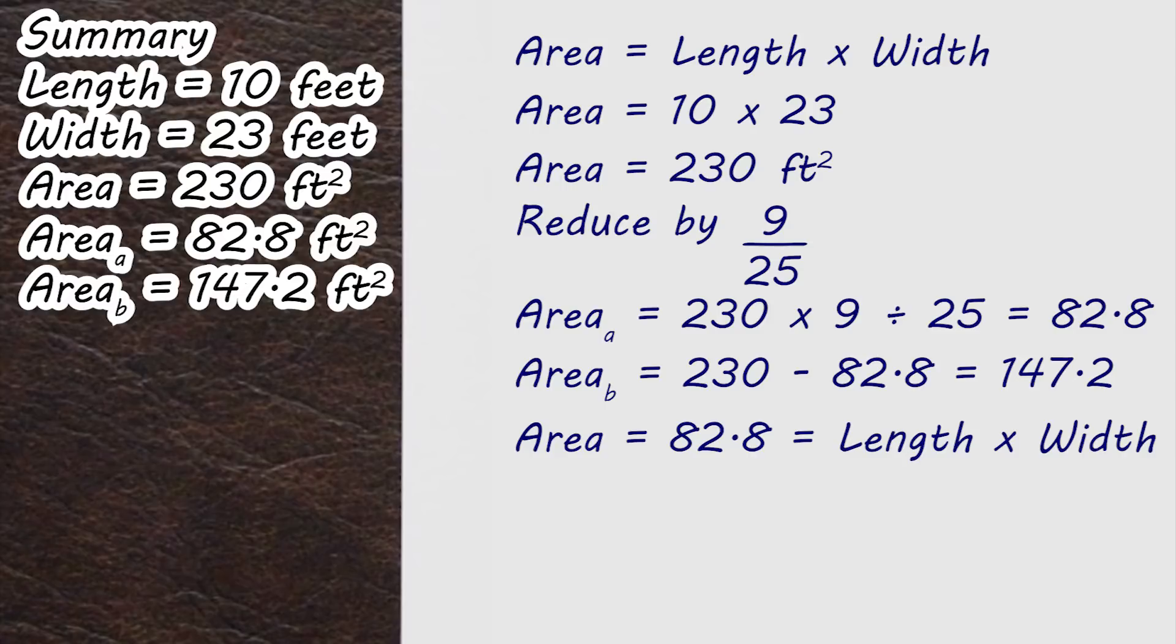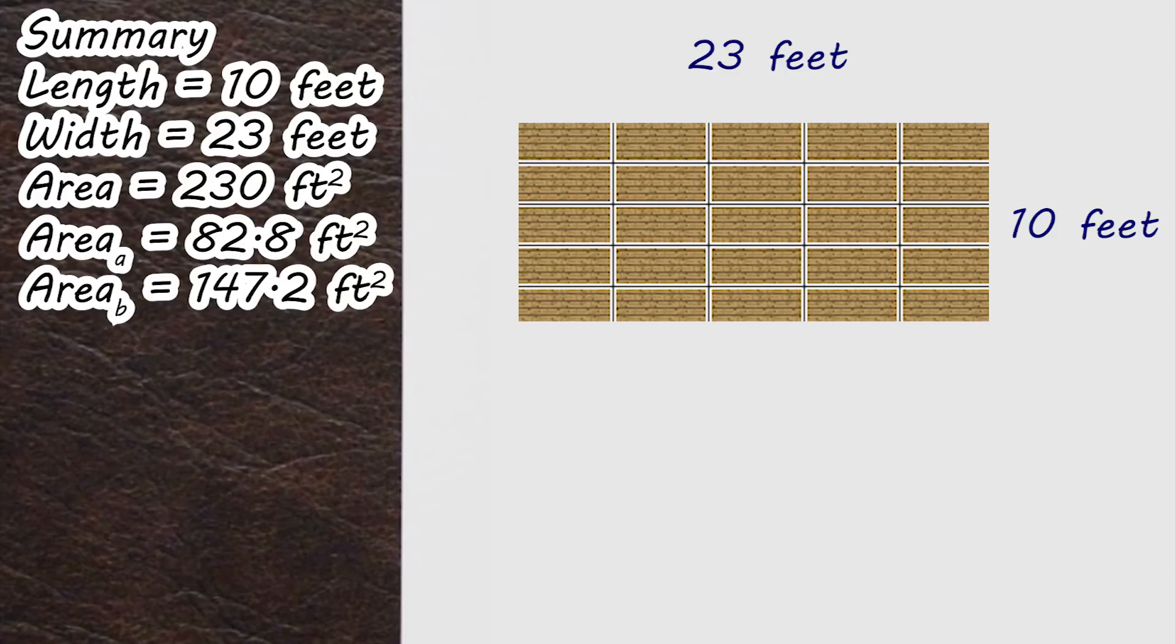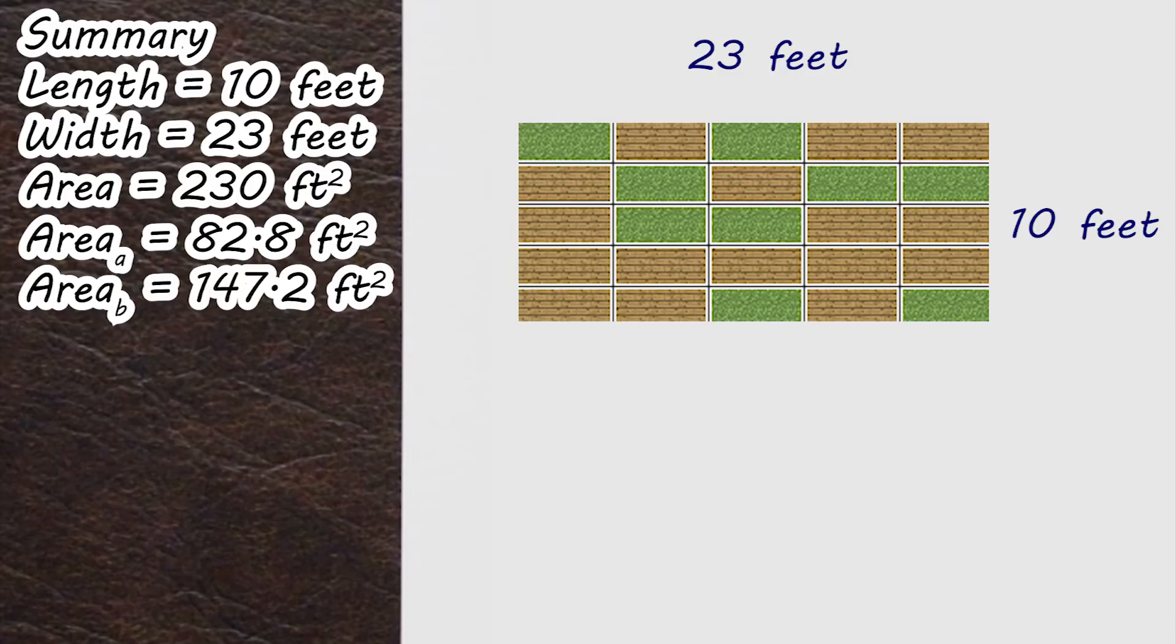We can see this if we have a look at it graphically. If we draw out our 10 by 23 rectangle and break it up into 25 equal pieces using five rows of five, we could choose to remove any nine that we want and leaving a shape behind. Since the question didn't actually state a preference, any of these dimensions would be a correct answer.